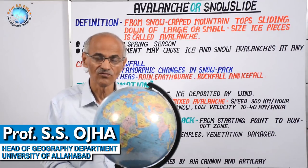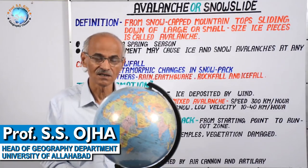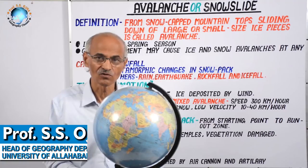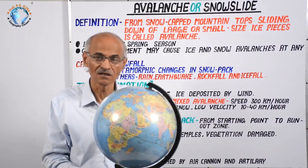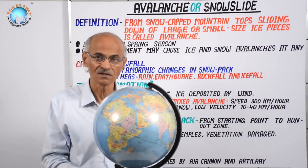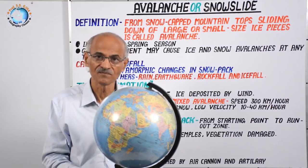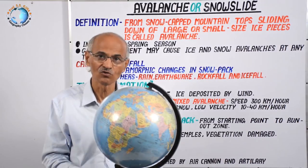The most suitable areas for avalanche are the high mountain peaks which are snow-capped in low latitudes, like the Rockies, Himalayas, Alps, Atlas, Kirthar, Suleiman, Zagros, and other tertiary folded mountains having snow-capped peaks.